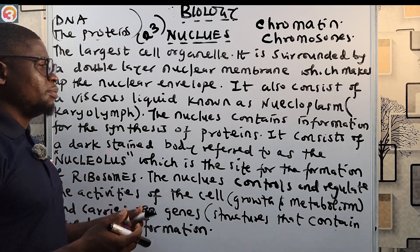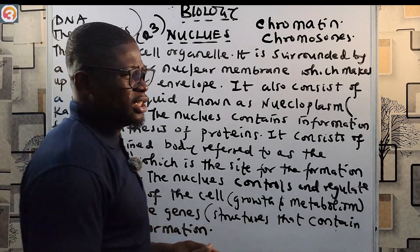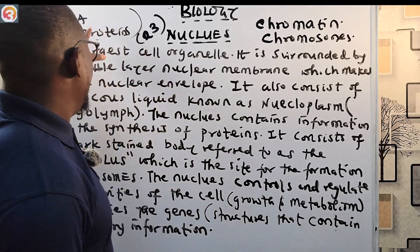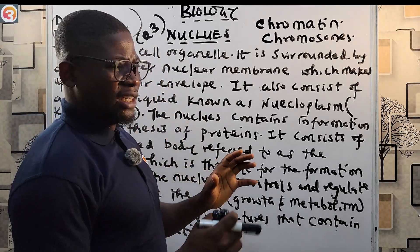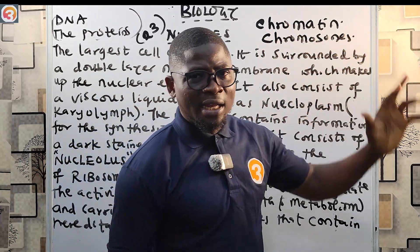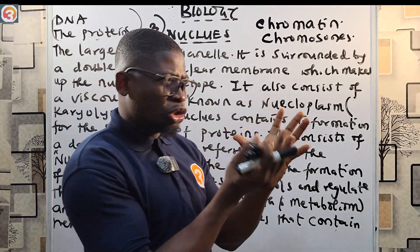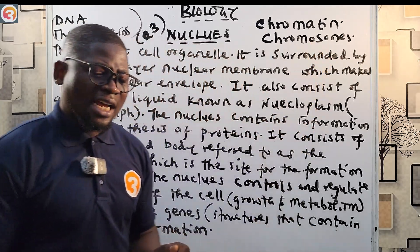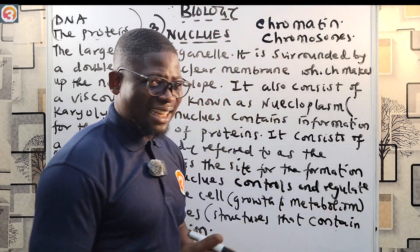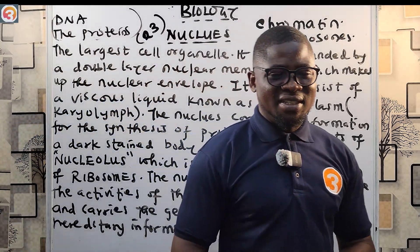To summarize: your genetic information is stored in the nucleus of the cell. That would be your DNA and the proteins that modify it, together called chromatin. The chromatin is arranged into structures called chromosomes, and in humans there are 23 chromosomes in every cell.